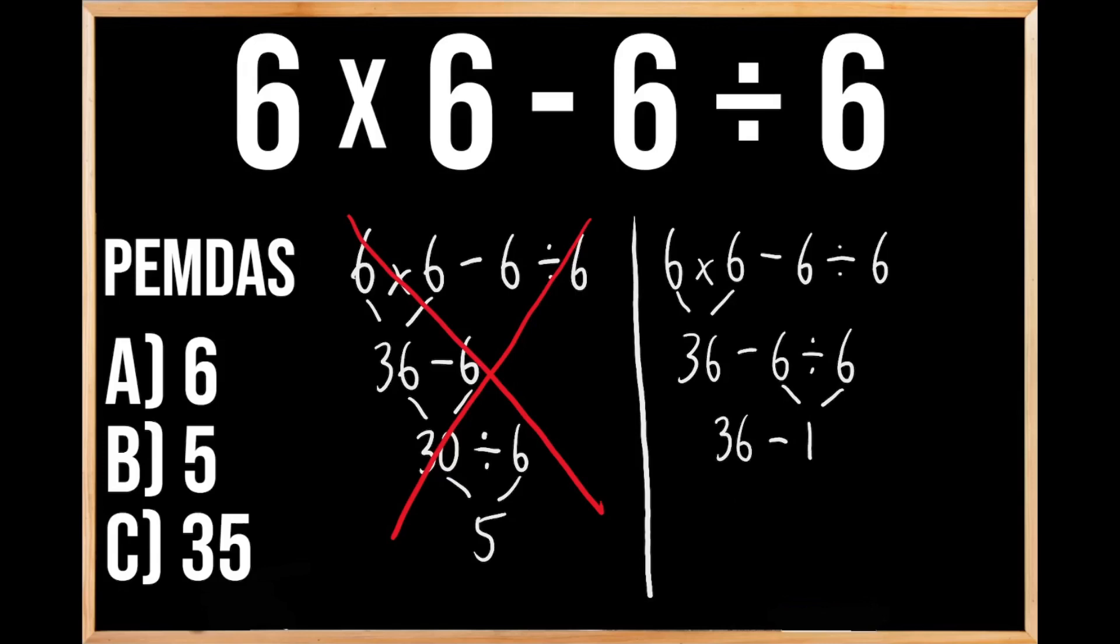And since we don't have any more multiplication or division to deal with, we're going to move on to our last priority of adding or subtracting. So we're going to take away 1 from 36, which is going to leave us with 35. So that means that our answer is C, 35.